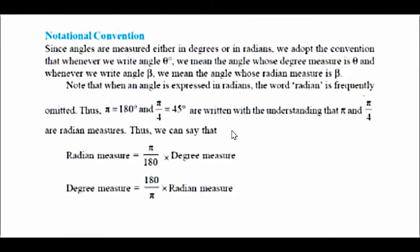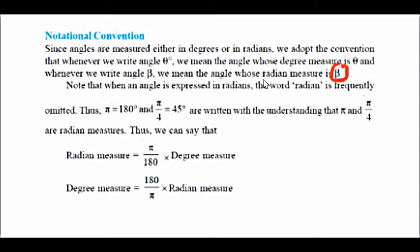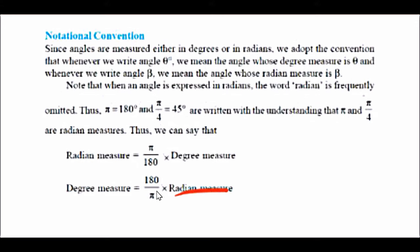Now we are on to the actual problems. These are the notational conventions we are going to follow. Theta is the degree measure — wherever you find theta, we are talking about degrees. Whenever we use beta or that representation, we are talking about radian measure. To convert degree to radian, multiply by π/180; to convert radian to degree, multiply by 180/π. Since π is an irrational number, we take the approximation 22/7.